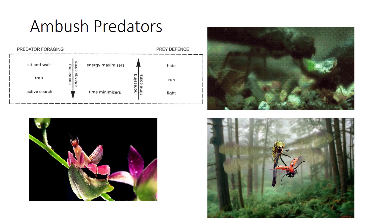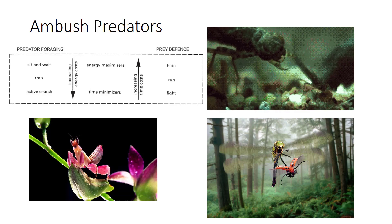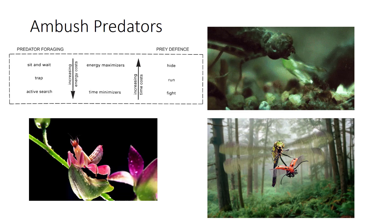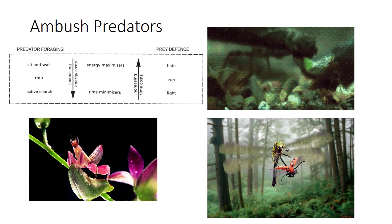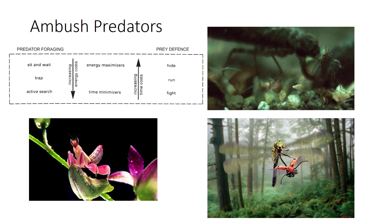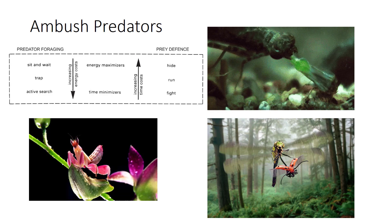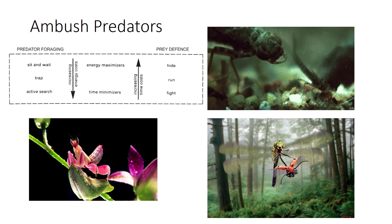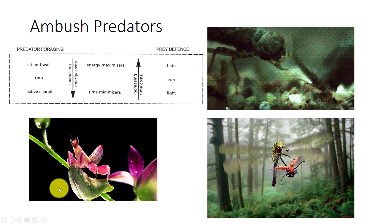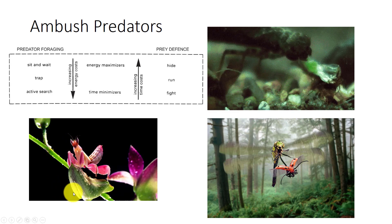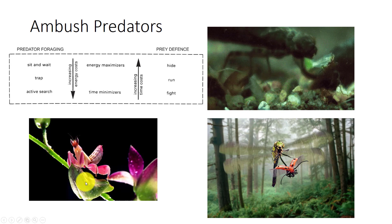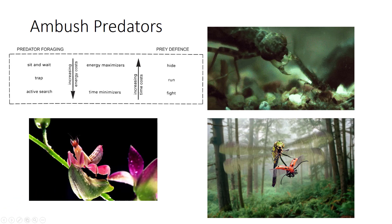Sit-and-wait or ambush predators find a suitable patch and wait for mobile prey to come within striking distance. Many have krypsis, a form of camouflage — they may look like tree bark, lichen, a twig, or a rock. This may be defensive to ward off birds rather than mislead invertebrate prey. Others may look like a flower to attract prey. This Malaysian mantid closely resembles the flowers of an orchid where it rests. Flies are encouraged to land by marks resembling flies on the body of the mantid, and once they land, they are a meal.